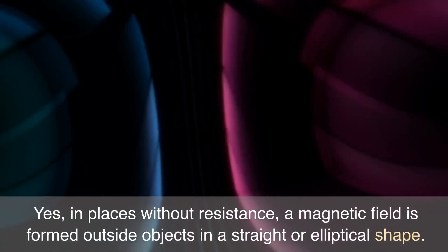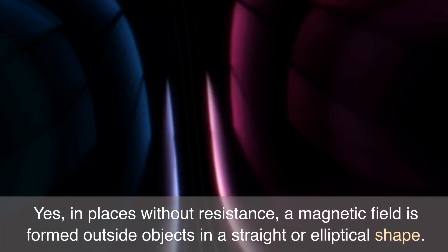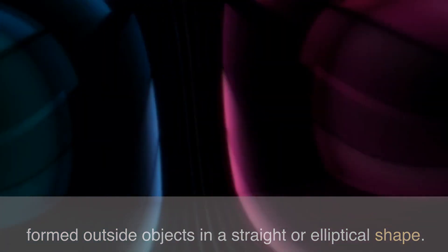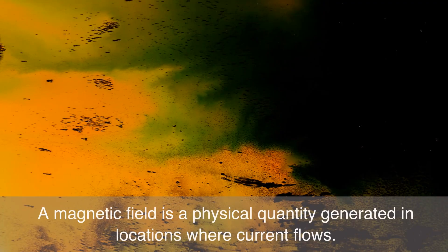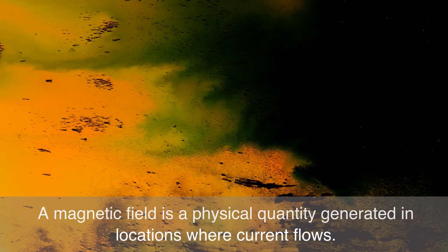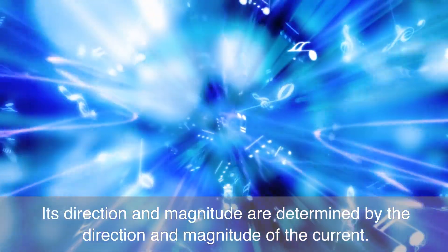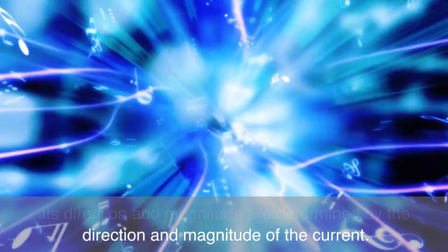Yes, in places without resistance, a magnetic field is formed outside objects in a straight or elliptical shape. A magnetic field is a physical quantity generated in locations where current flows. Its direction and magnitude are determined by the direction and magnitude of the current.